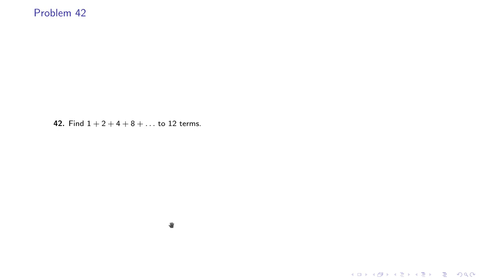Problem number 42 says that find 1 + 2 + 4 + 8 and so on to 12 terms. If you see carefully, then in this case your common ratio is 2, because 2/1 is 2, 4/2 is 2, 8/4 is also 2, and the number of terms in the geometric progression is 12.